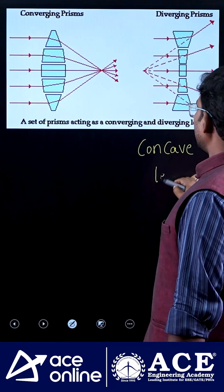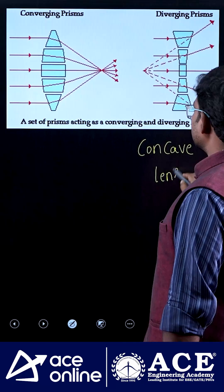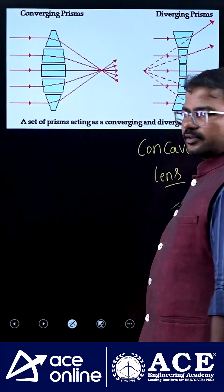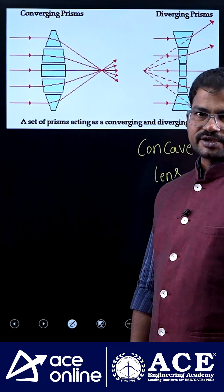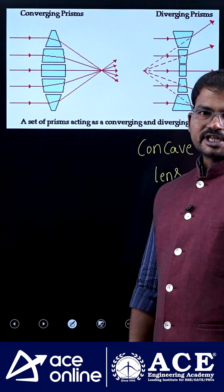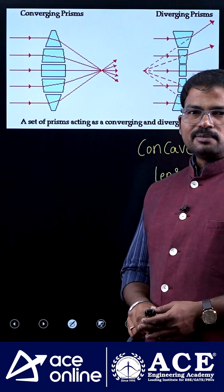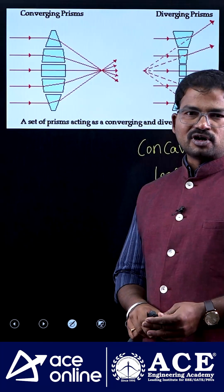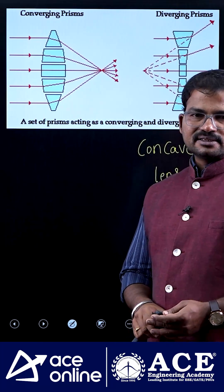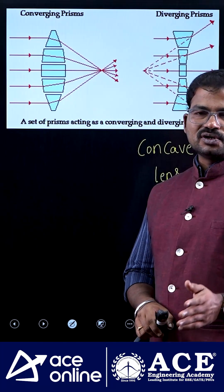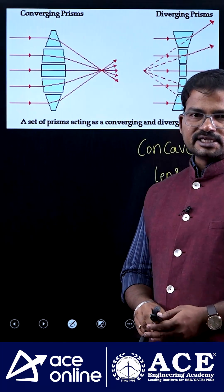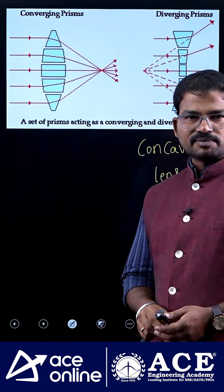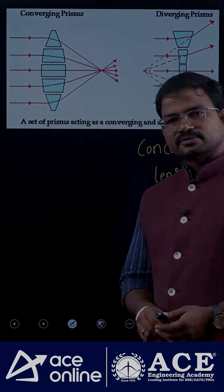Here I have a question for you: what is the optical power of a convex lens — is it positive or negative? If you know the answer, please comment. Thank you.